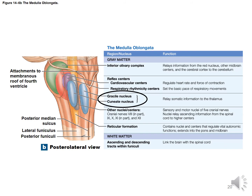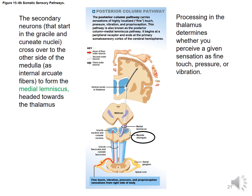The gracile nucleus and cuneate nucleus can be seen in the brain stem in the medulla oblongata, and these will relay somatic information to the thalamus. From the cord up to the medulla, the names remain consistent — gracile or cuneate.